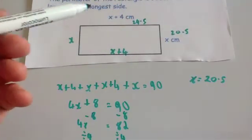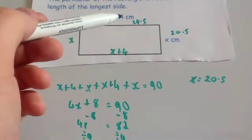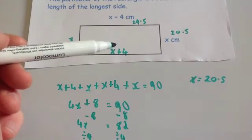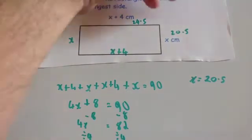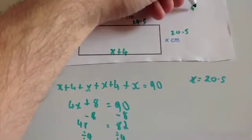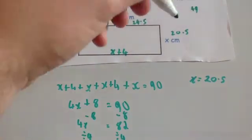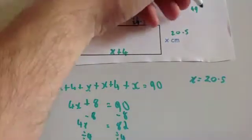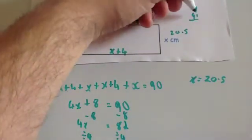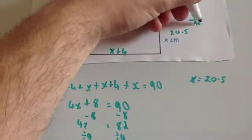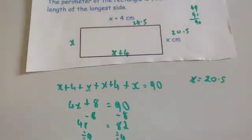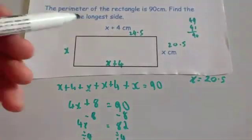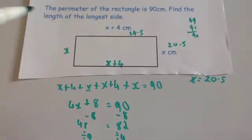Let's check: 24.5 plus 24.5 is 49, and 20.5 plus 20.5 is 41. Adding 49 and 41 gives 90. Fantastic — that confirms our answer. The question asks for the longer side, so the answer is 24.5cm.